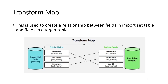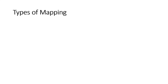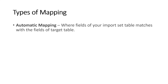Once the mapping is done you will go to transform. There are two types of mapping: automatic mapping, which you use when the field names in your staging table match those in the target table. For example, if both have 'user ID,' mapping is done automatically — you don't need to manually map those fields.